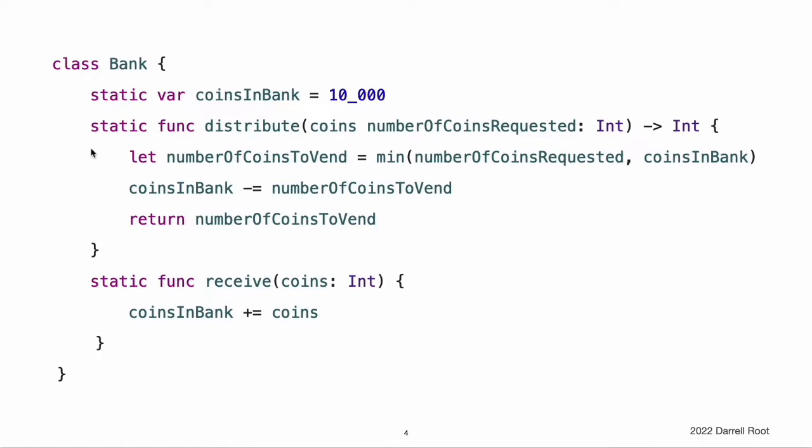If there are not enough coins, Bank returns a smaller number than the number that was requested and returns zero if no coins are left in the bank. It returns an integer value to indicate the actual number of coins that were provided. The receive coins method simply adds the received number of coins back into the bank's coin store.